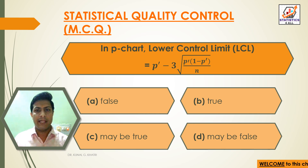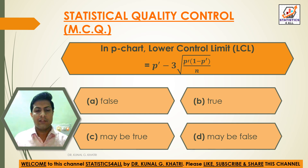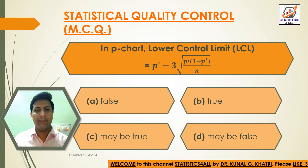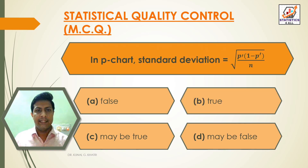Question 11: In P chart, the lower control limit (LCL) is equal to P-dash minus 3 × √(P-dash × (1 − P-dash) / n). Option A: False, Option B: True, Option C: Maybe true, Option D: Maybe false. Answer: Option B — True. LCL = P-dash − 3 × √(P-dash × (1 − P-dash) / n).